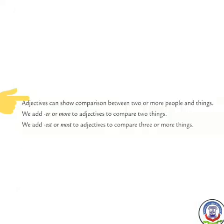Adjectives can show comparison between two or more people and things. We add -er or 'more' to an adjective to compare two things. Agar do ka comparison ho, toh -er use karte hain, ya toh 'more' adjective ke aage lagaate hain. We add -est or 'most' to adjectives to compare three or more things — teen ya teen se zyada ho, toh -est ya 'most' use karte hain.